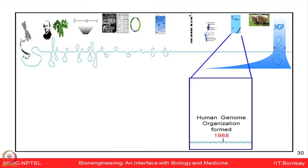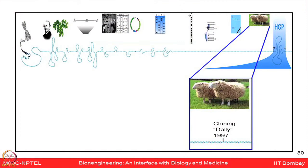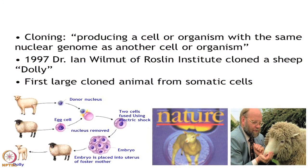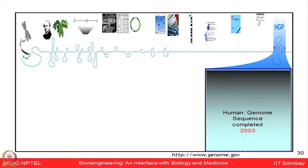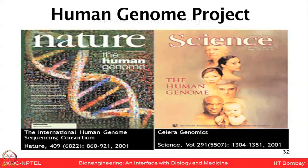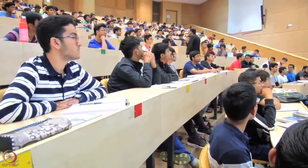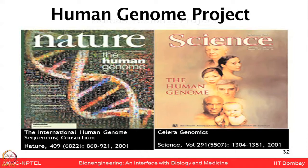The Human Genome Organization started the ambitious project of sequencing all human genes in 1988. While that was underway, scientists learned more about the cell, cloning, development, and reprogramming, culminating in the cloning of a sheep named Dolly by Ian Wilmut in 1997 — an organism with the same nuclear genome as another. Human genome sequencing projects were completed in 2001–2003, with the first draft human genome map presented on the cover pages of Nature and Science.